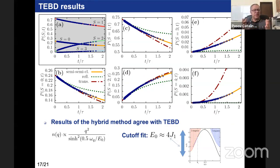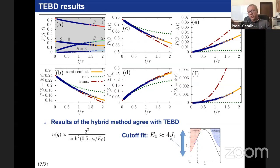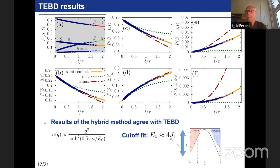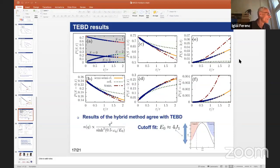In the fully reflective limit, the entanglement entropy saturates at log(2)/2. But using the hybrid approach, the entropy starts to grow linearly — which is what you would expect from TEBD calculations. The fully reflective case does not capture this. Thank you very much. We go to the next talk, a contributed talk by Gonzalo de Polsi from Uruguay.